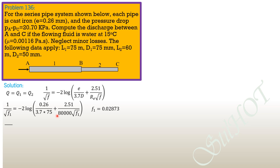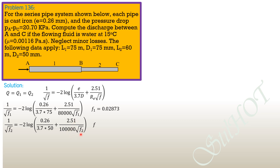For friction factor 2: 1 over square root of F2 equals negative 2 log of quantity (0.26 over 3.7 times 50) plus (2.51 over 100,000 times square root of F2). The higher Reynolds number is assumed because the mean velocity is expected to be higher in pipe 2, and Reynolds number is directly proportional to mean velocity. So F2 equals 0.03165.